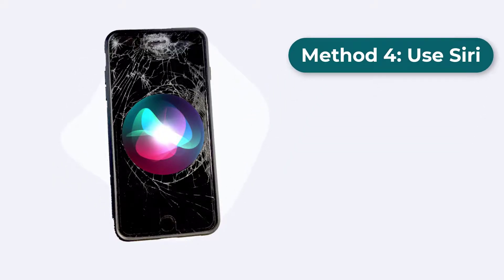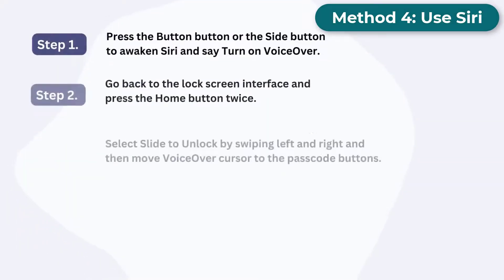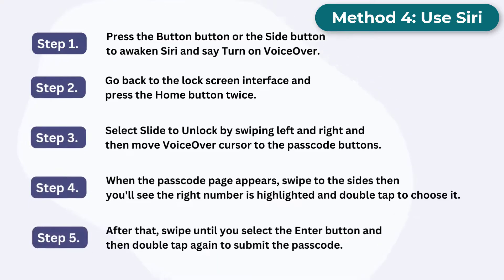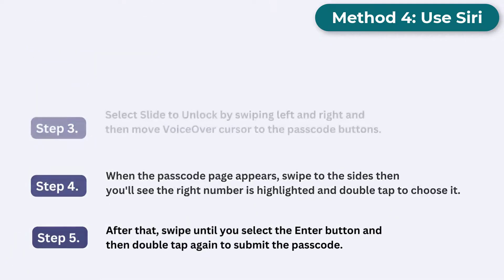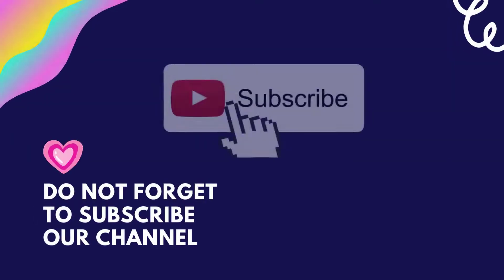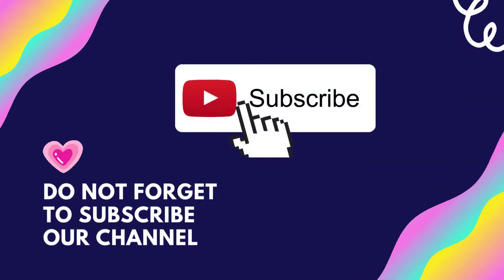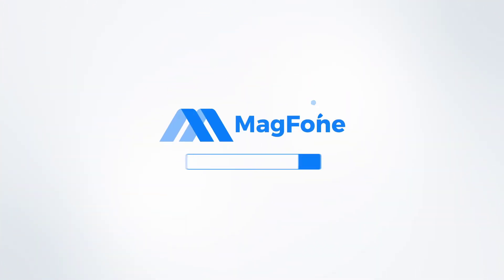Method 4: Use Siri to bypass iPhone. You can also use Siri to unlock an iPhone with a broken screen, but this method does not always work — it is still worth a try. Hope these methods help you unlock your iPhone with a broken screen. If you like this video, do not forget to subscribe to our channel. See you next time.